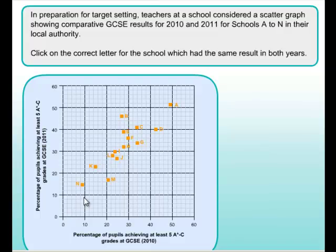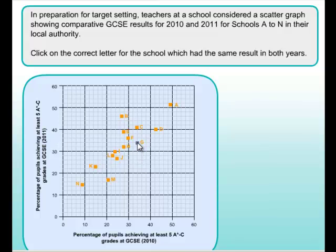Let's scan along the diagonal now. It hasn't hit anything yet - it nearly hits J but hasn't quite. And then here we go, it hits G. We'll carry on to see if any other candidates emerge - it just misses those. So school G is our answer. In 2010 the score was 34, and in 2011 it was also 34. So that's definitely correct - G is our answer.